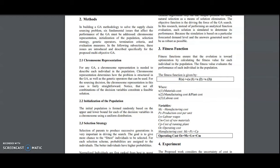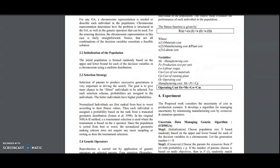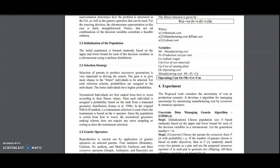How to initialize the population? The initial population is based on the upper and lower bound of each of the decision variables that we have identified. These decision variables are uncertain variables. Coming to the selection strategy, the selection strategy is based upon the selection of parents to produce successive generations. The goal is to give more chance to the fittest individuals. Normalized individuals are first ranked from best to worst according to their fitness value. Then each individual is assigned a probability based on the rank from a truncated geometric distribution.